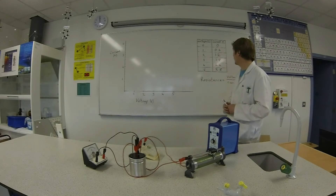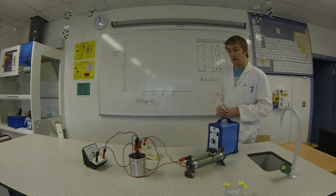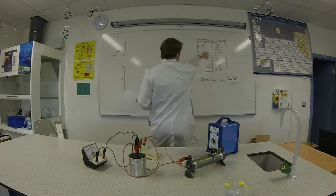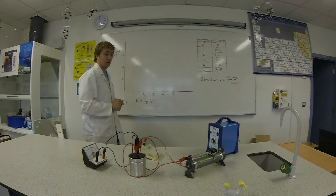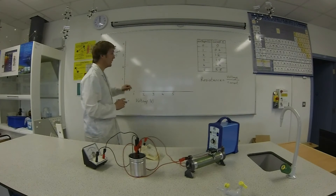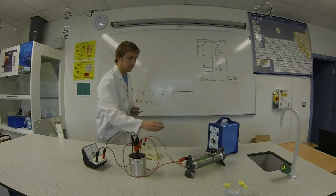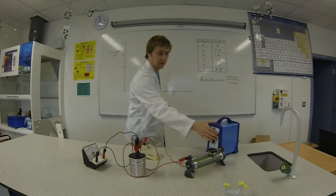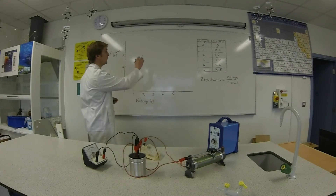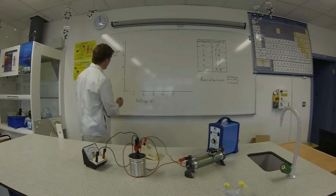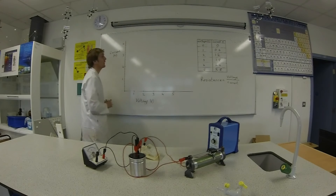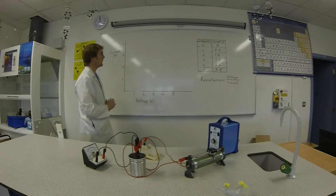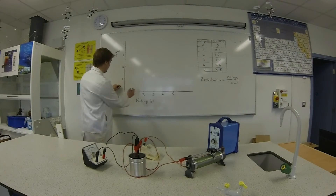Okay, so you can see there we have our set of points and now we'll just plot these points on our graph. Let's turn this off. So our first point is zero zero, the origin. Second point is one volt, 0.6 amps.